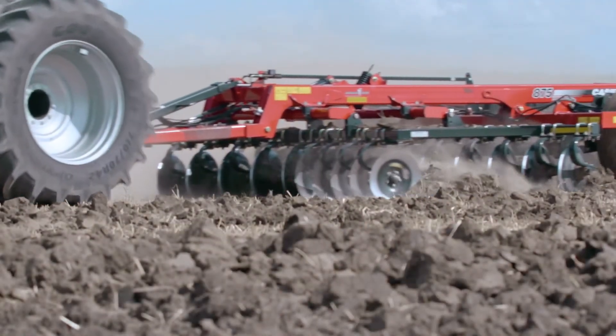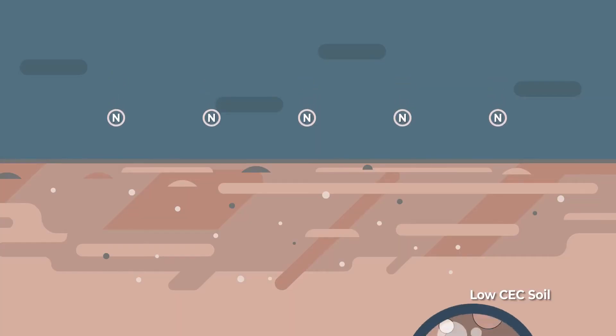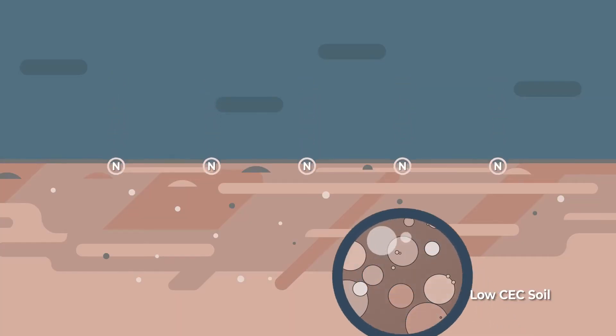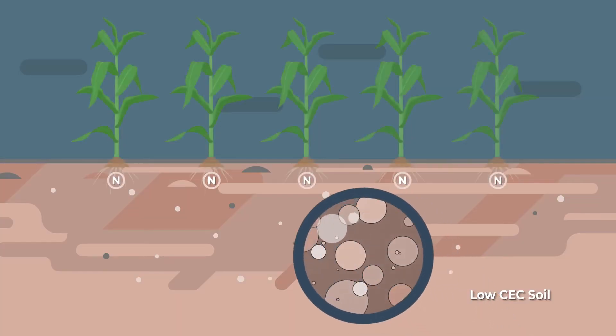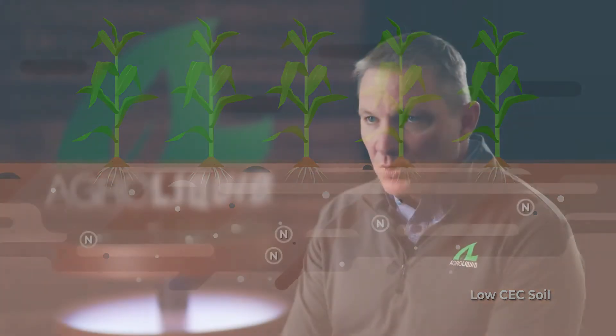For a grower that's looking to apply nutrients, CEC is pretty critical — especially for nitrogen or sulfur, those nutrients that are highly leachable. In a sandier soil, they're not going to stick around as long and are very susceptible to leaching or movement offsite, so your crop can no longer use them. What's important is its ability to determine how much nitrogen you should ever apply at one point in time.